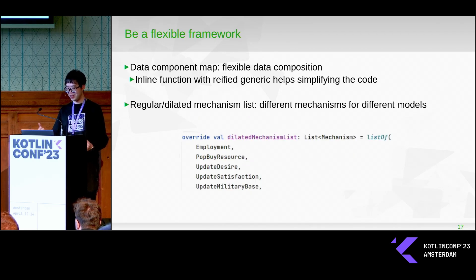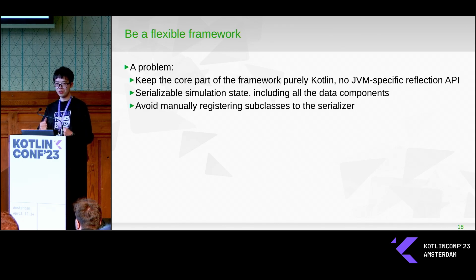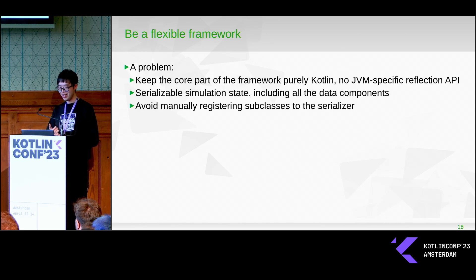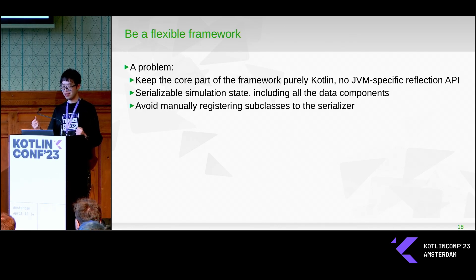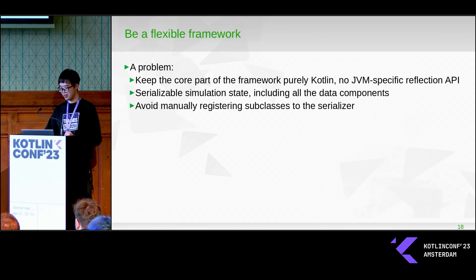You also have to have different mechanisms for different models. This creates another problem because I want to keep the core part of my framework purely Kotlin for future multi-platform application — I'm not sure if I'll go there, but I think it's nice to keep this open. So I try to avoid JVM-specific reflection APIs. Additionally, I want all data to be serializable and I want to avoid manually registering subclasses for the serializer, and I didn't manage to find a good solution for this problem.